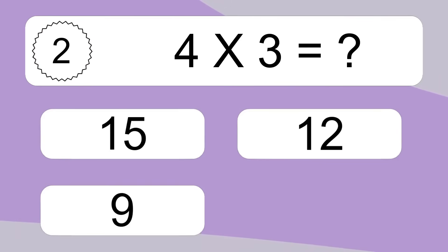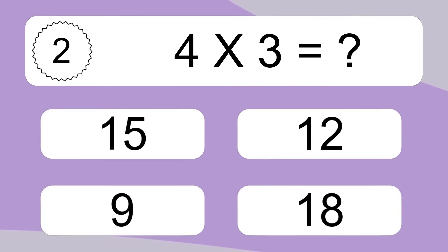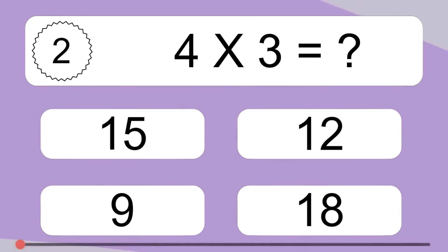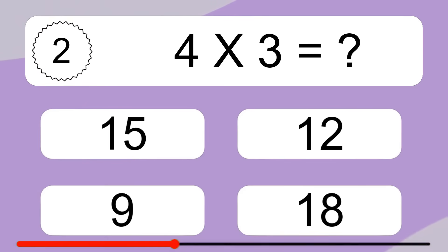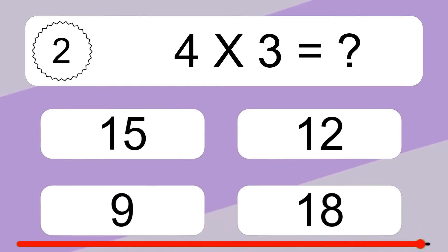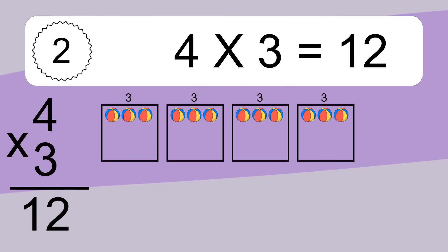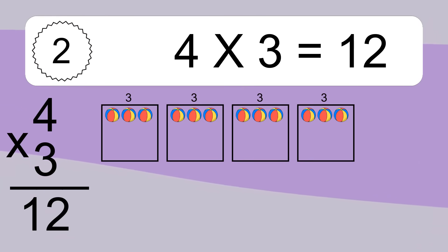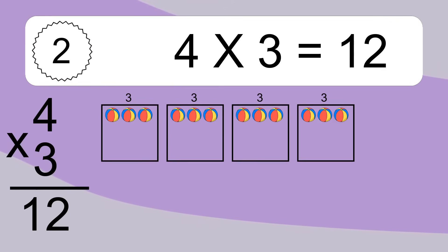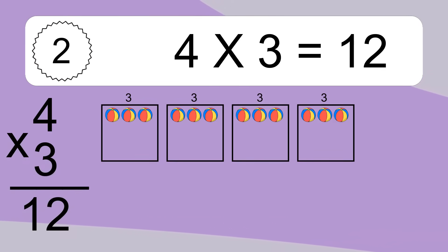Four times three equals what? Four times three equals twelve. We have four boxes, and each box has three colorful balls inside. If you count all the balls in all the boxes together, you will have four times three balls. This equals twelve balls.